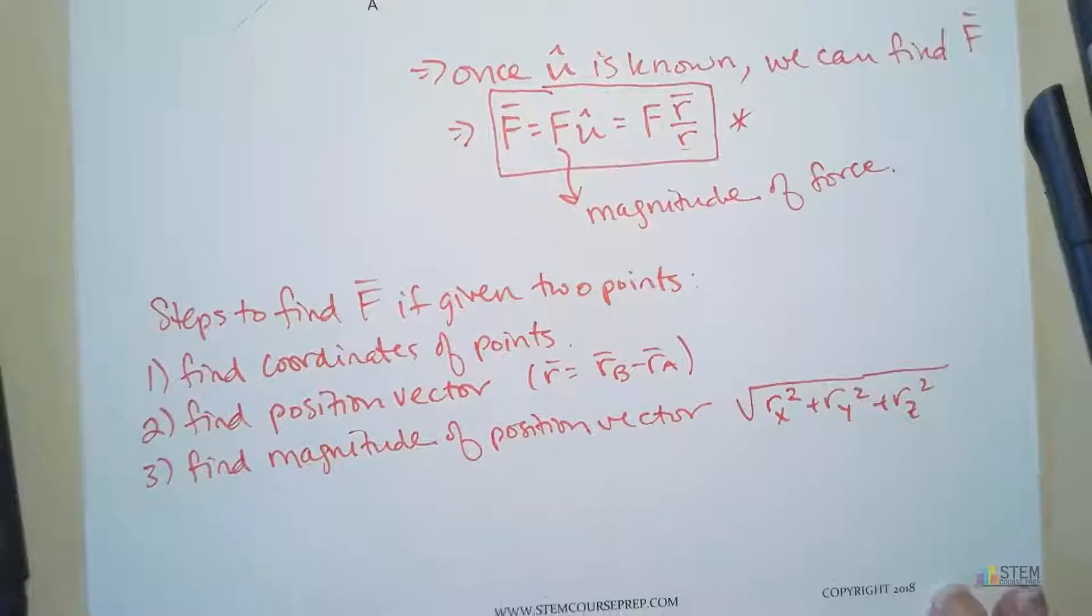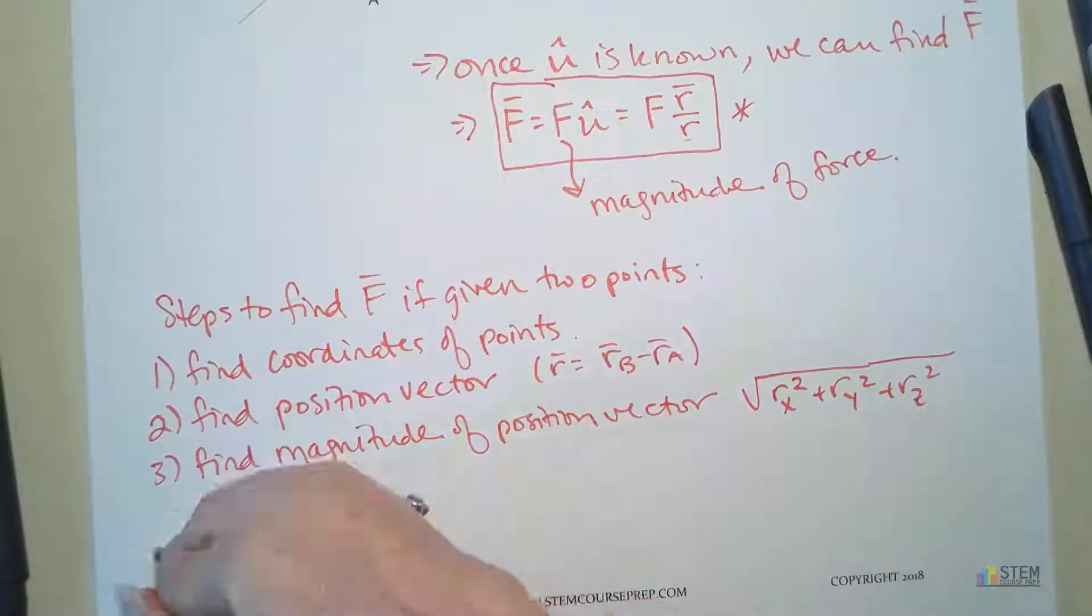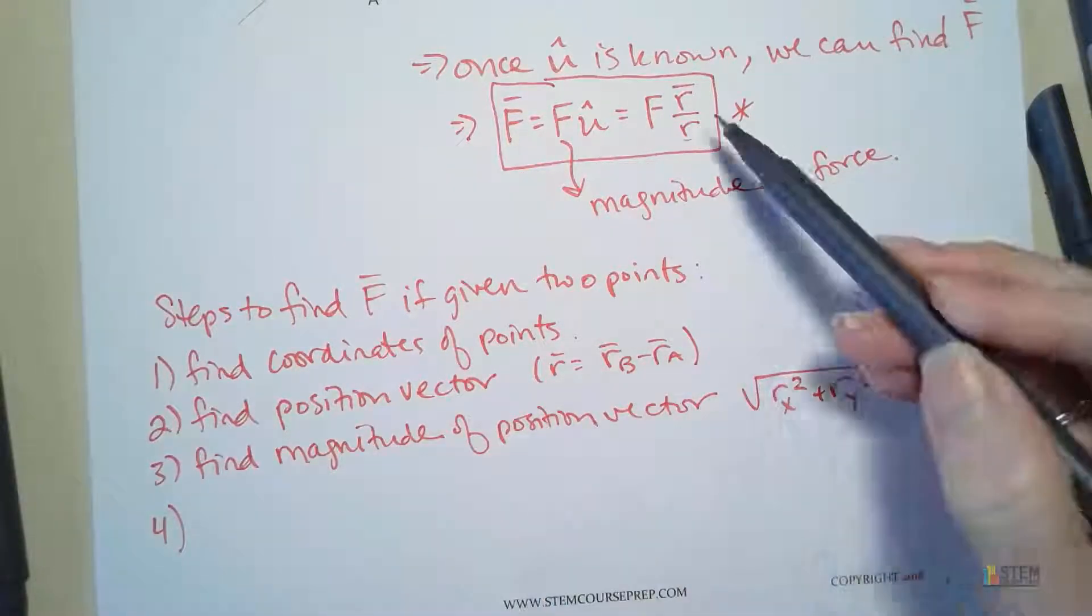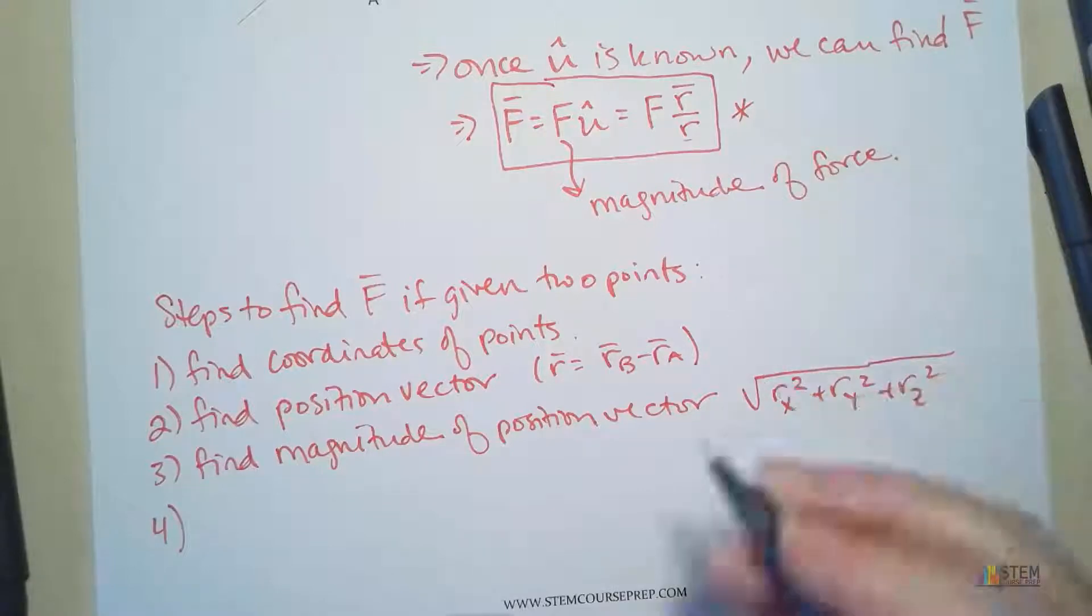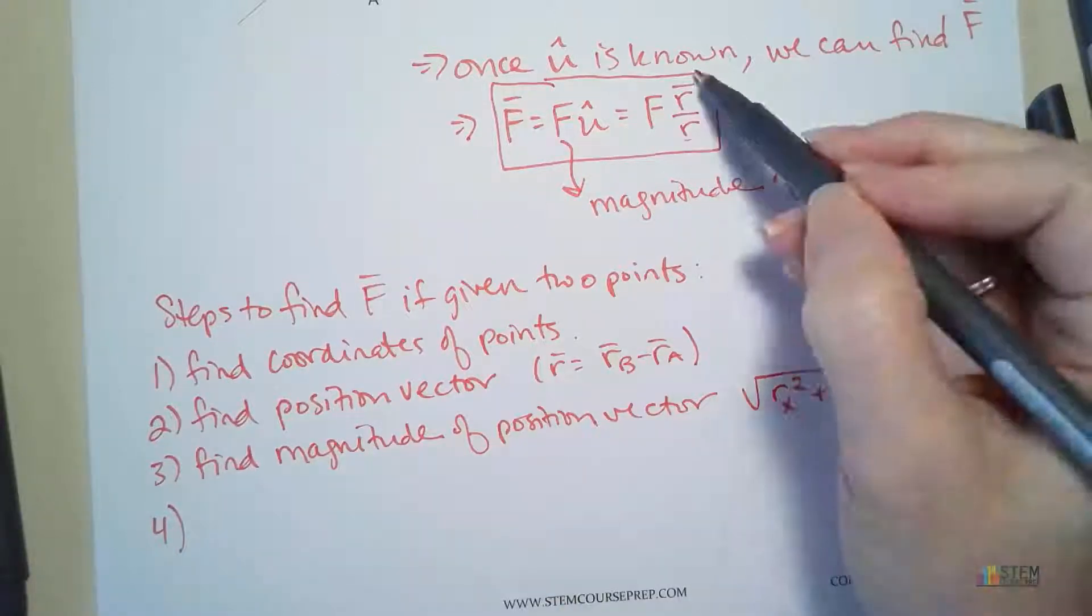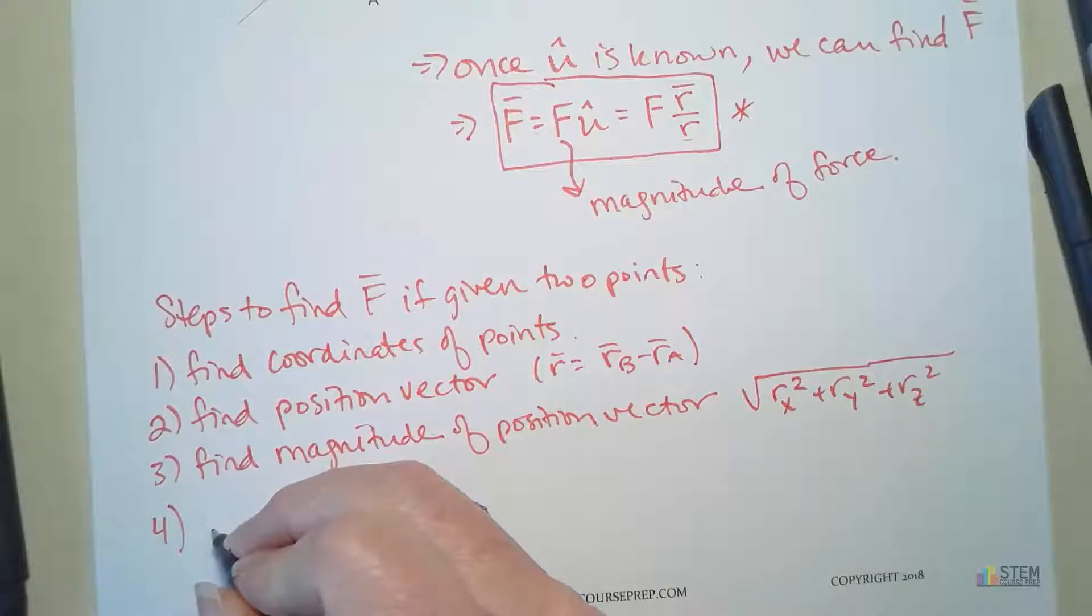And then finally, you need to multiply all of that with your force magnitude. After you put it all together. So then you'd have R over, or R bar, the position vector, over the magnitude. And then multiply it by the force magnitude.